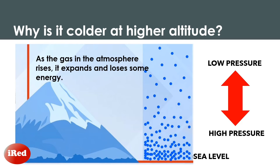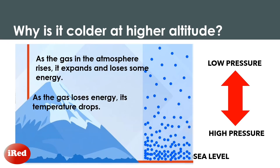So as the gas in the atmosphere rises, it feels less pressure, which makes it expand and lose some energy. And if it loses energy, its temperature must drop — because we define temperature as the average energy of the particles. Therefore, if the energy of the particles is lower, the temperature must be lower.